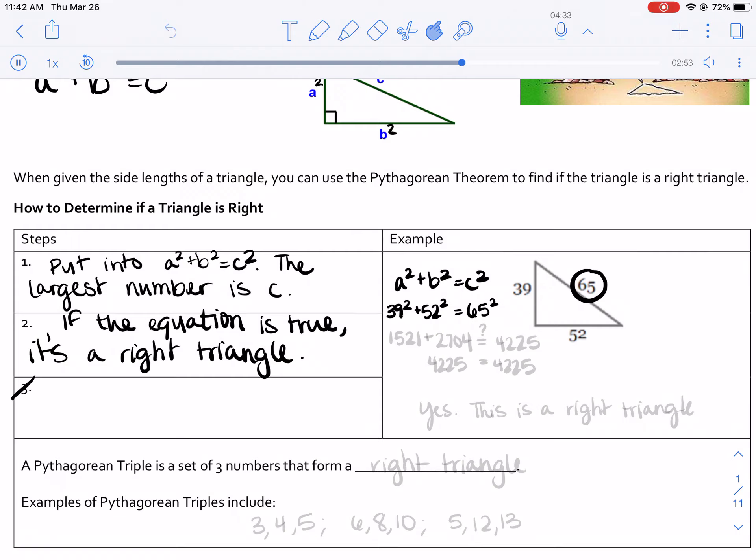So I put in 39² and I get 1521. You could either put that in a calculator or Google or whatever you are using right now. And then 52² is 2704. And we want to know, does that equal 65²? And that's 4225.